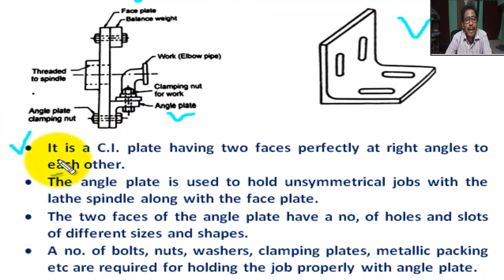So, angle plate, it is a CI plate, cast iron plate, having two faces perfectly at right angles to each other.